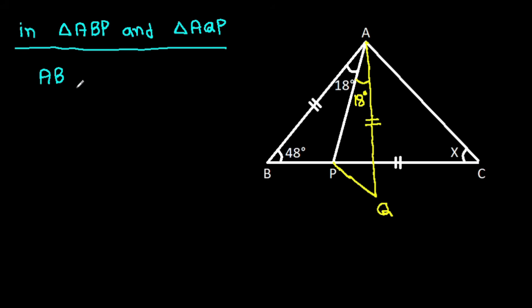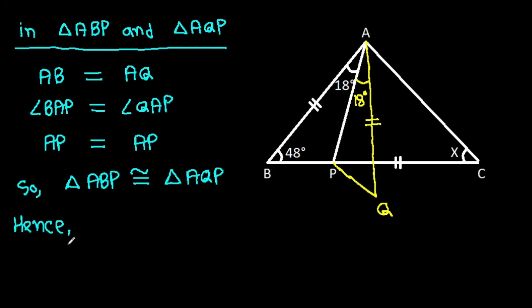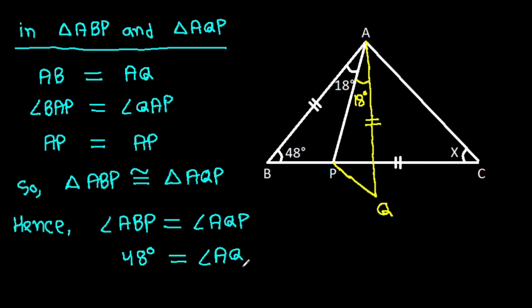AB is equal to AQ, angle BAP is equal to angle QAP, and AP is common. So triangle ABP is congruent to triangle AQP. Hence, angle ABP is equal to angle AQP. And angle ABP is 48 degrees, so angle AQP is also 48 degrees.